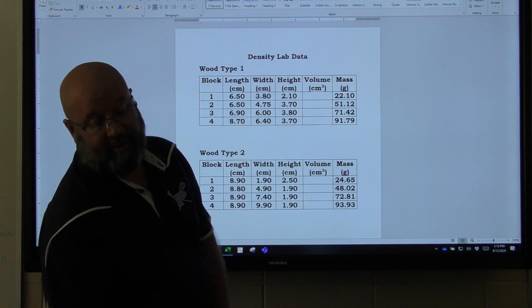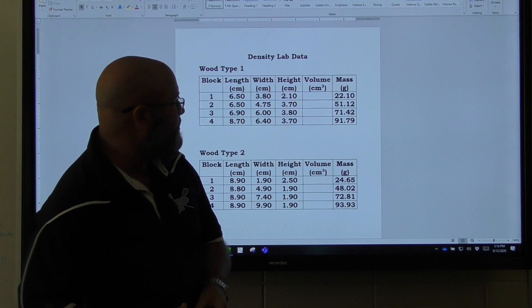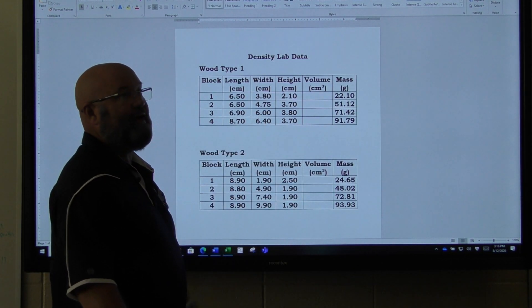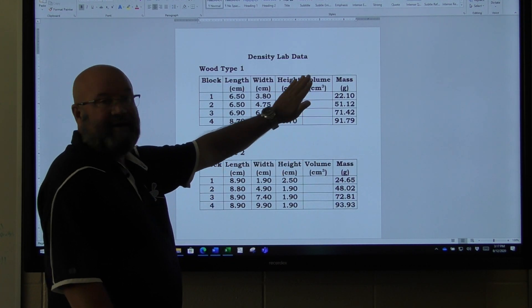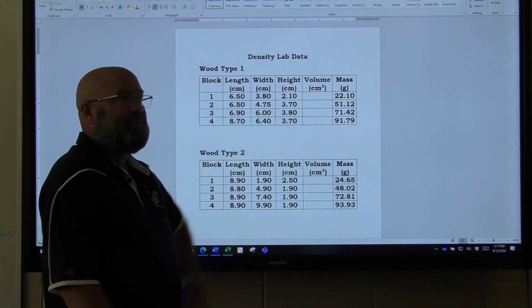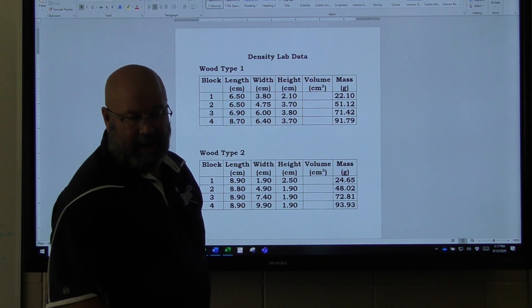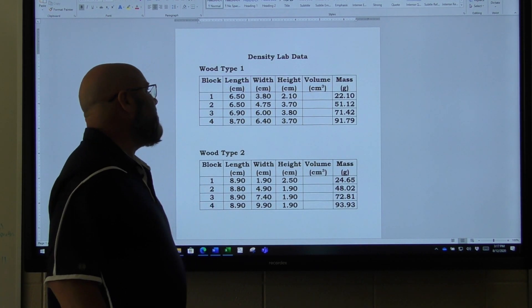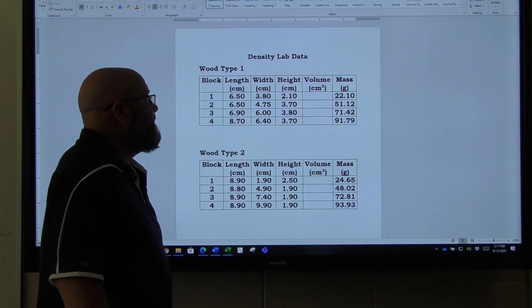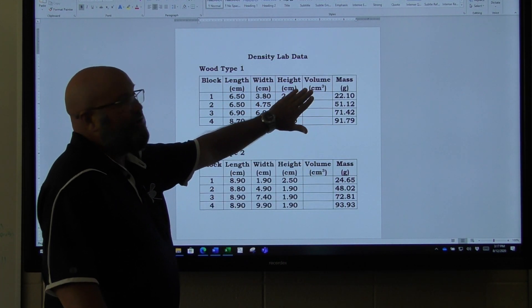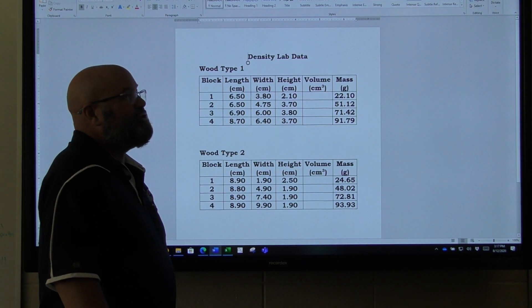I repeated those same measurements with the ruler—length, width, and height—for blocks two, three, and four and recorded those values. Then I've left that column open for volume. That'll be something that you will have to calculate for each block. If you're unsure how to calculate the volume of a rectangular solid, you might want to look that up, but it should be length times width times height. You're going to fill that in on your table when you do your assignment.